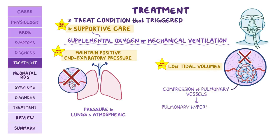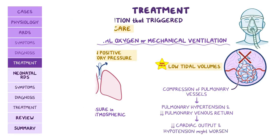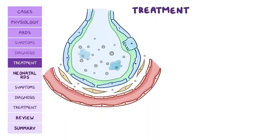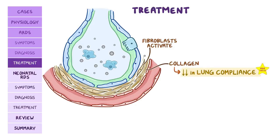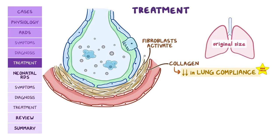Positive pressure ventilation can cause compression of pulmonary vessels, leading to pulmonary hypertension, decreased pulmonary venous return, reduced cardiac output, and worsening hypotension. Even with supportive care, macrophages cleaning up cell debris attract and activate fibroblasts, which secrete collagen and form scar tissue in the alveolar walls. If there's enough scar tissue, it decreases lung compliance, meaning the individual may have residual symptoms for life.